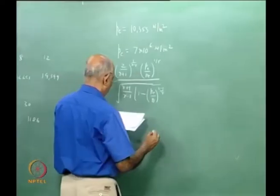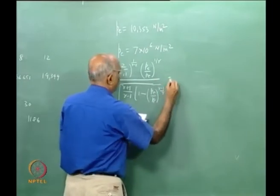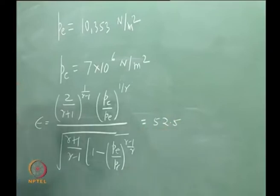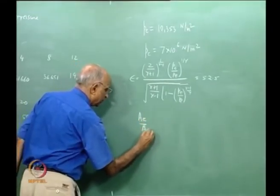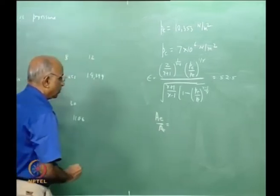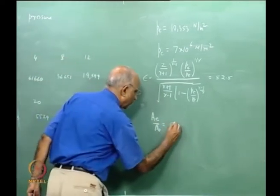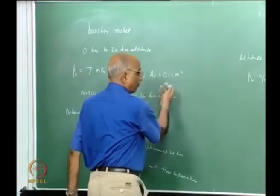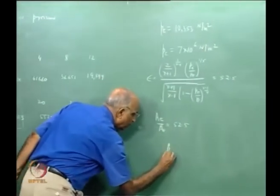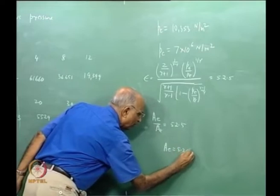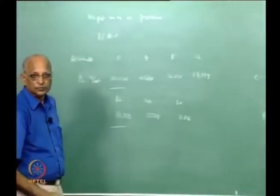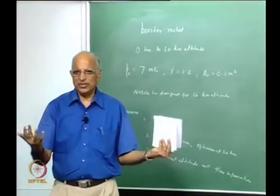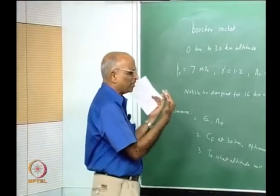Substituting the values, the area ratio ε = A_E/A_t comes out to be 52.5. Since A_t = 0.1 m², the exit area A_E = 52.5 × 0.1 = 5.25 m². Rockets tend to be quite straightforward to analyze. Note that a 5.25 m² exit area means the exit nozzle is very large.